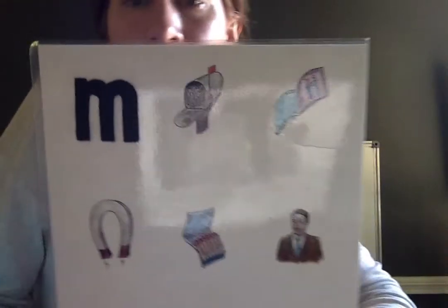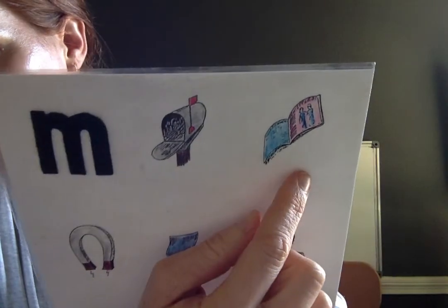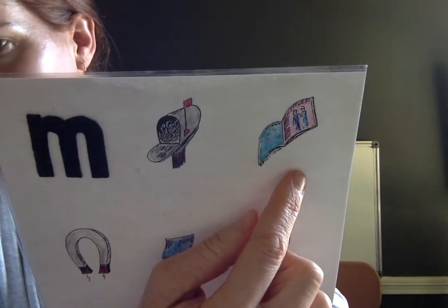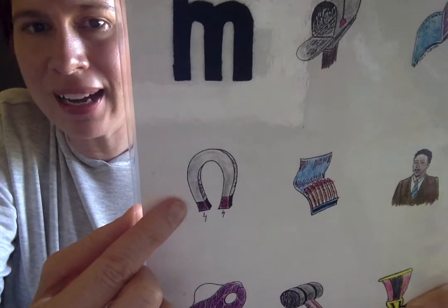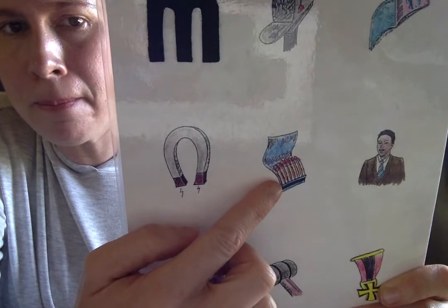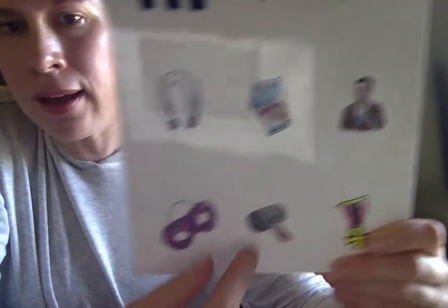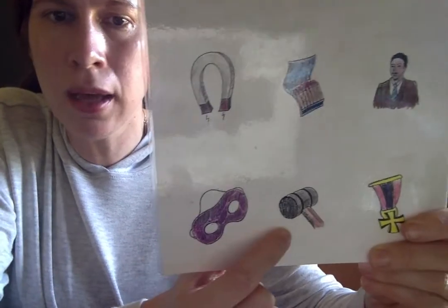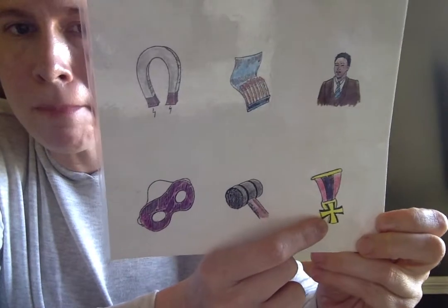Let's talk about what are some words that start with M. Mailbox. Magazine. Magnet. Matches. Man. Mask. Mallet. Medal.